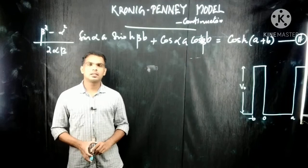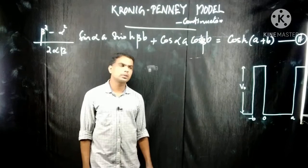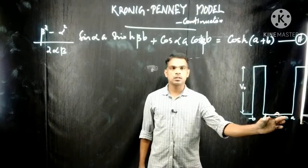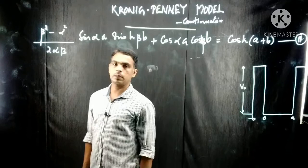Hello, welcome back. Let us continue from where we left off. In the last class we were discussing the Kronig-Penney model. We derived this equation in the last class — this is the equation for the periodic potential of this form. The periodic potential has a potential well width of a, the barrier width is b, and V₀ is the potential barrier height.